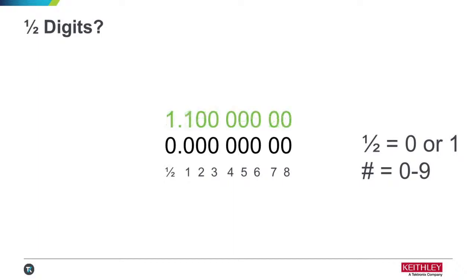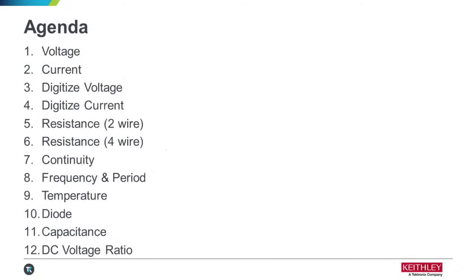For example, most instruments can do 1.1 because most instruments have some over-range. This shows a 10% over-range. If you tried to go to 1.11 — an 11% over-range — generally instruments can't do that. You'll look for either a 10% or 20% over-range; 10% is most common, but with high-power instruments you see a lower over-range, maybe even one or two percent on particular ranges.